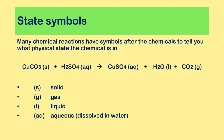Those state symbols tell you the physical state: (s) means solid, (g) means gas, (l) means liquid, and (aq) means aqueous — that is, dissolved in water. In the equation on this slide: copper carbonate is a solid (s), sulfuric acid is aqueous (aq), copper sulfate is aqueous (aq), water is a liquid (l), and carbon dioxide is a gas (g).